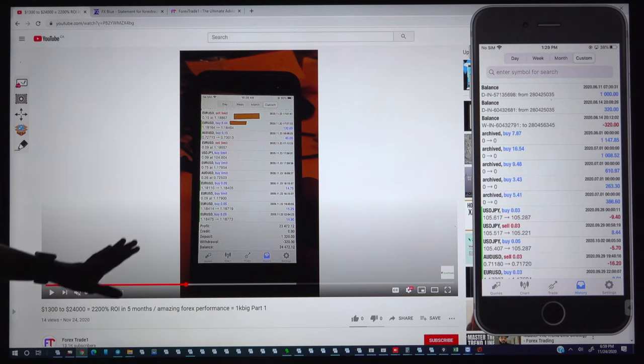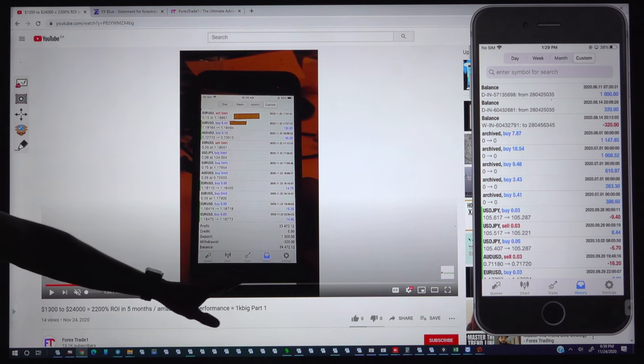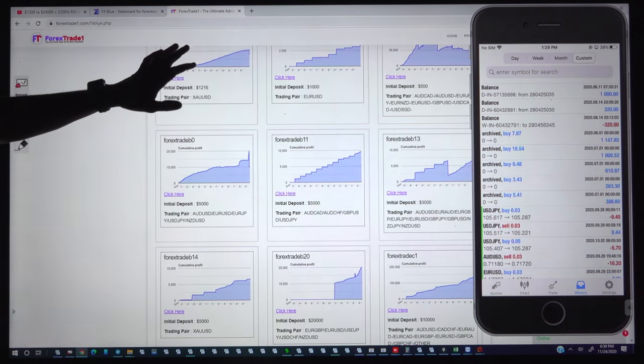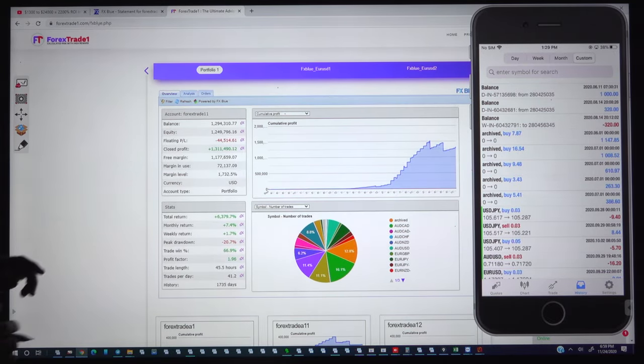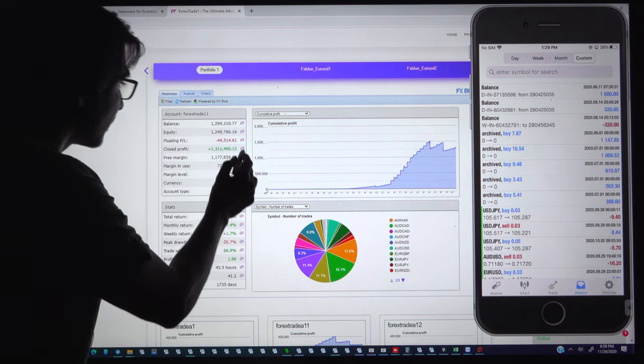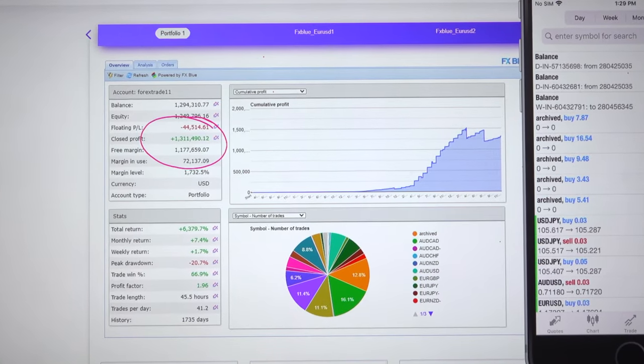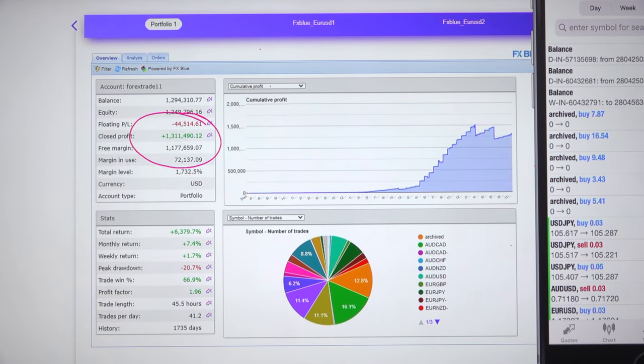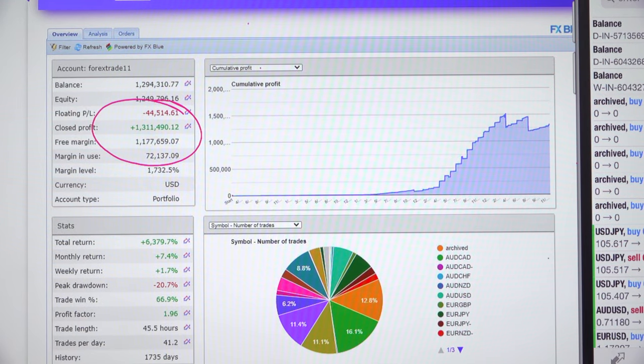We will go ahead. These are the videos we have uploaded and the same account with the same profit, with the same withdrawal. We uploaded the account within our FX Blue portfolio performance where we have already booked the profit 1.3 million and still the balance 1.3 million is there and floating PL 44,000. The same account we have connected in our portfolio. We will look at the same account which we have connected.